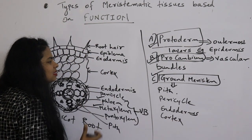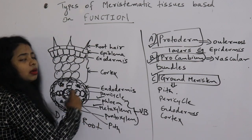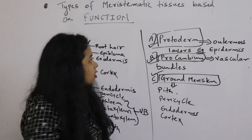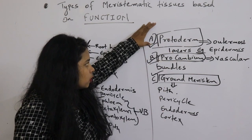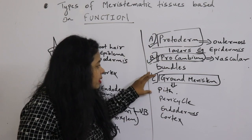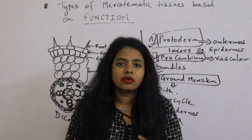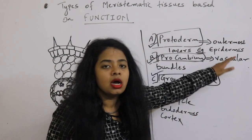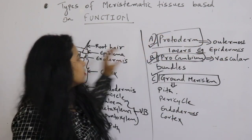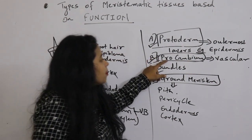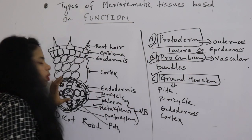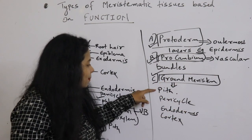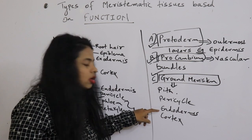Then cortex. So all these different parts, apart from the vascular bundles and the outermost layers, are made up from ground meristem. So all these types—protoderm, procambium, and ground meristem—are present in the young parts of the plant. Protoderm forms the outermost layer, that is epidermis. Procambium forms the innermost, that is vascular bundles like xylem and phloem. Ground meristem forms pith, pericycle, endodermis, and cortex.